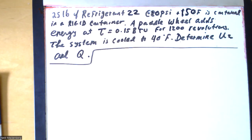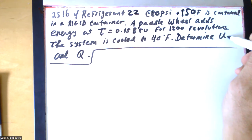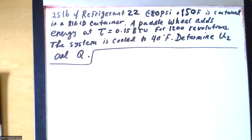Let's do this question with refrigerant 22. We have 25 pounds of it at 80 PSI and 150 degrees Fahrenheit, contained in a rigid container. There's a paddle wheel that adds energy with a torque of 0.15 BTU for 1200 revolutions. The system is cooled to 40 degrees Fahrenheit, and we want to know the final specific internal energy U2 and whether the system lost or gained heat.